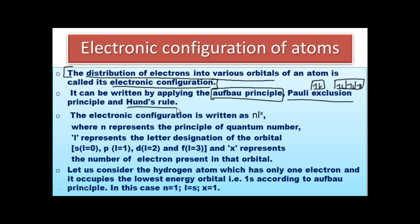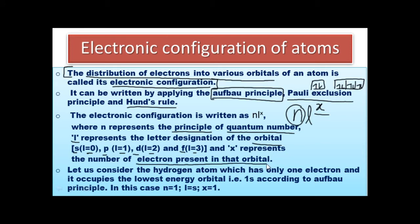These are the three rules to fill electrons in various orbitals. Electronic configuration is written as N L^x. N is the principal quantum number; L is the azimuthal quantum number representing the orbital designation — S (L=0), P (L=1), D (L=2), F (L=3). X represents the number of electrons present in that orbital.